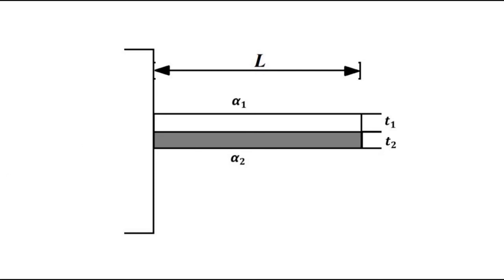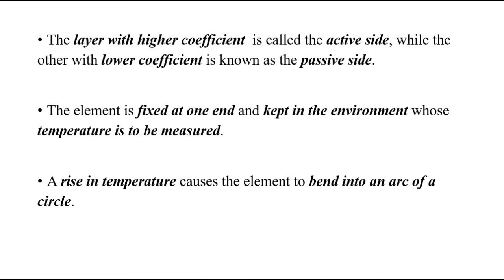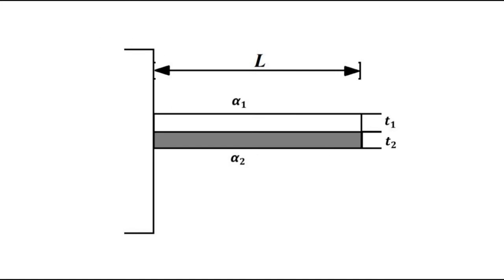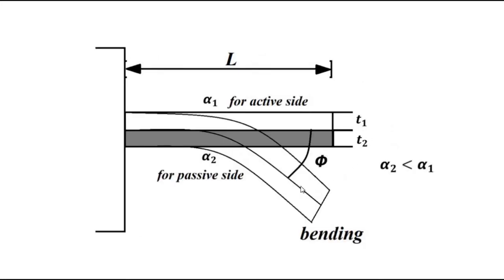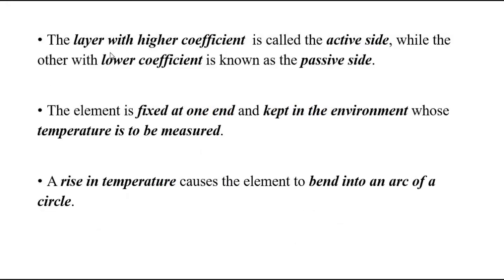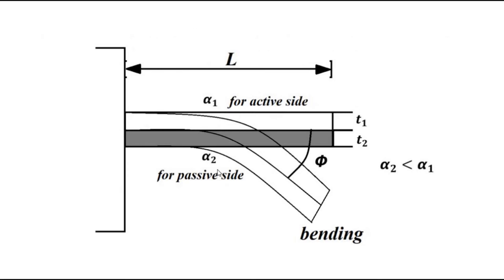When this bi-metallic element has to measure temperature at any particular point, it is exposed to that place. Because of the different coefficients of thermal expansion, when exposed to a certain temperature it starts curling or bending. The layer with a higher coefficient of thermal expansion is called the active side (alpha 1), and the layer with a lower coefficient is called the passive side.